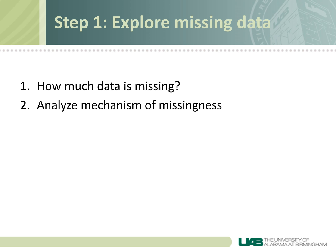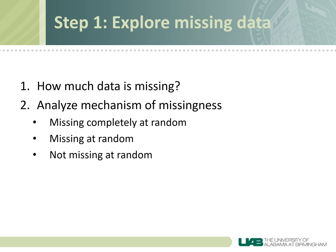The second thing you want to do is analyze missing data to see if it's missing at random or if the missing data is dependent on some other variable. There are three mechanisms of missing data, and you'll want to perform a statistical test called Little's missing completely at random test to determine if the data is missing completely at random or not. Missing completely at random means that the probability of missing data on variable Y is unrelated to the value of Y itself and the value of any other variable in the data set.